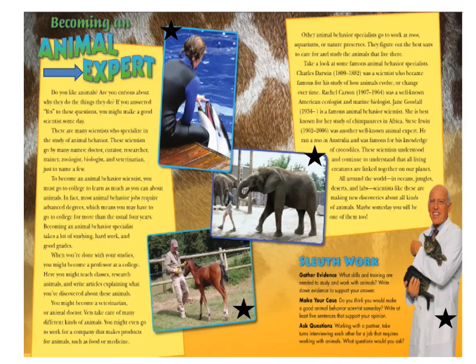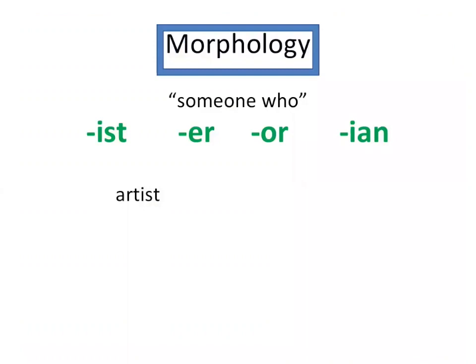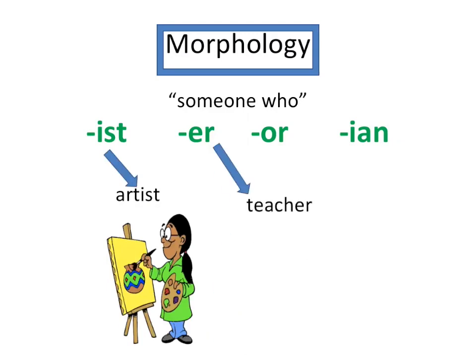Feel free to annotate or highlight the text as we are learning today. One of the strategies we want you to keep in mind as we read is how we can use our knowledge of suffixes to better understand unfamiliar words. You may have previously learned a few suffixes that mean 'someone who': I-S-T, E-R, O-R, and even I-A-N. When they're added to the end of a base word, we know it means someone who does something. For example, an artist is someone who does art, or a teacher is someone who teaches. So keep your eyes open for these suffixes in the text.